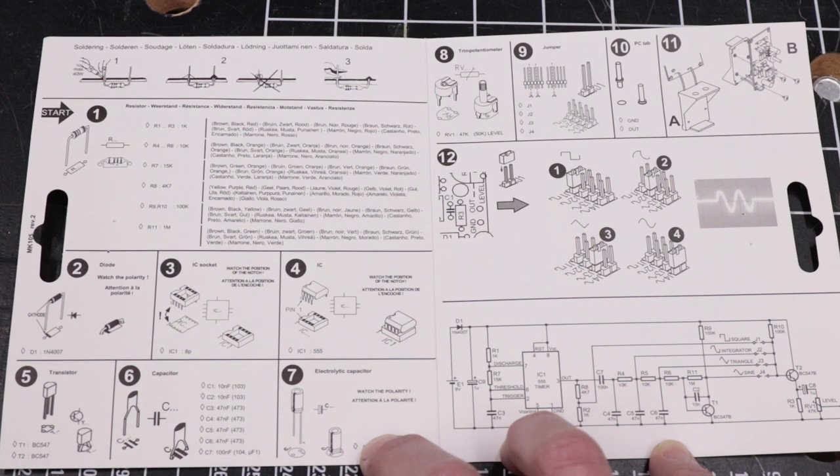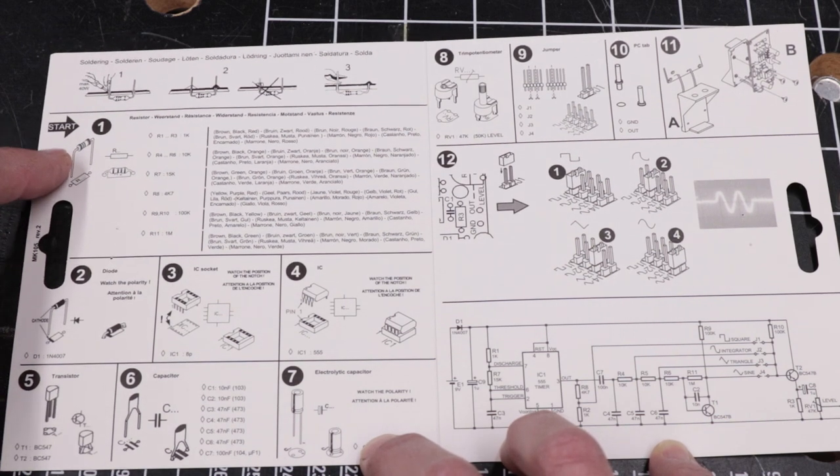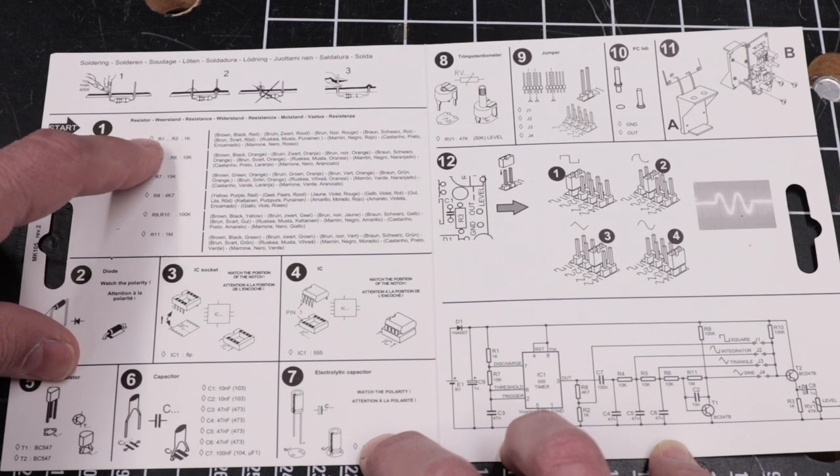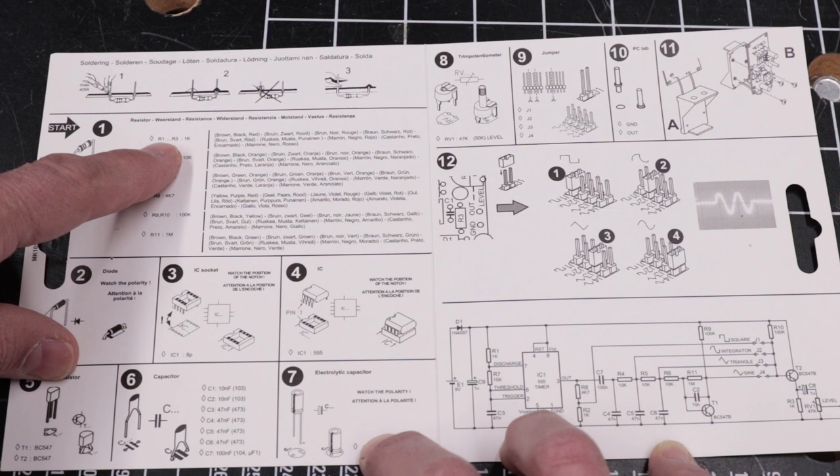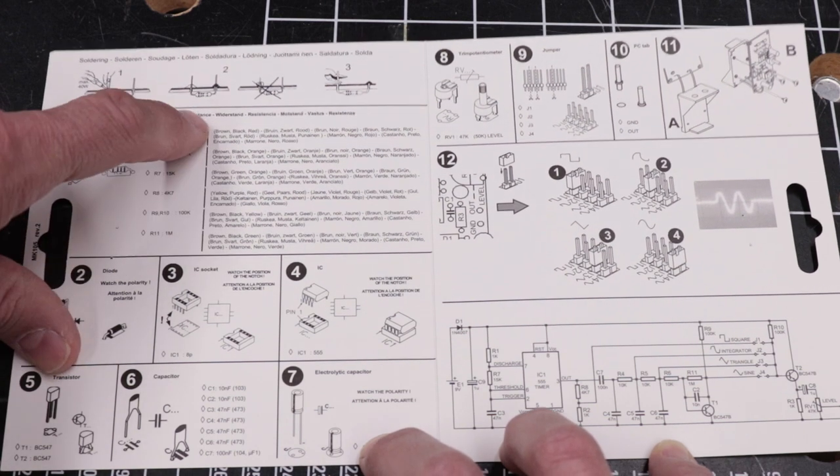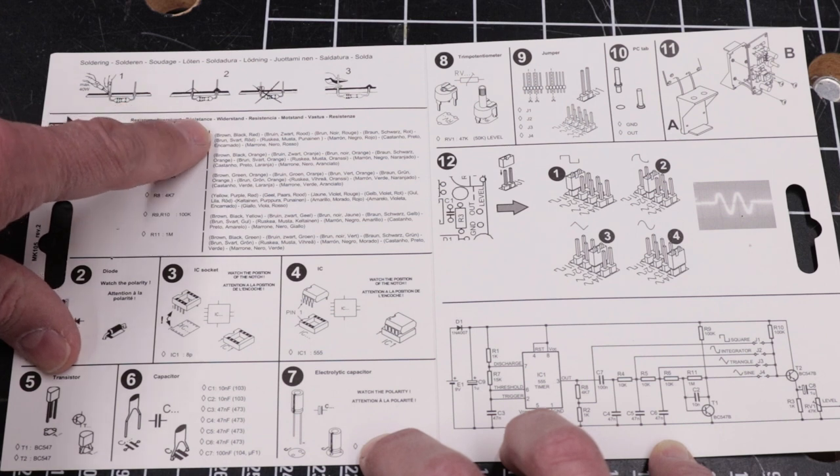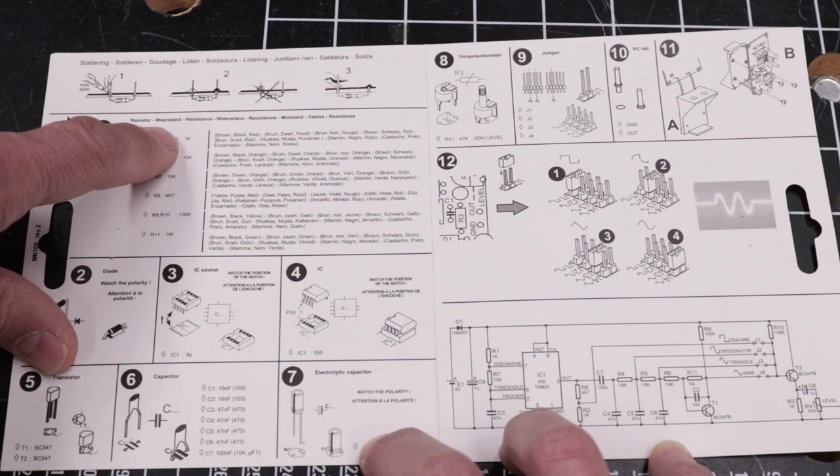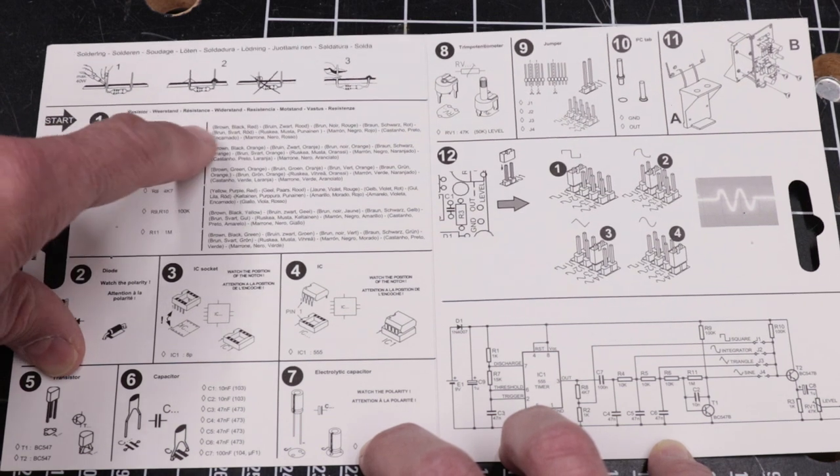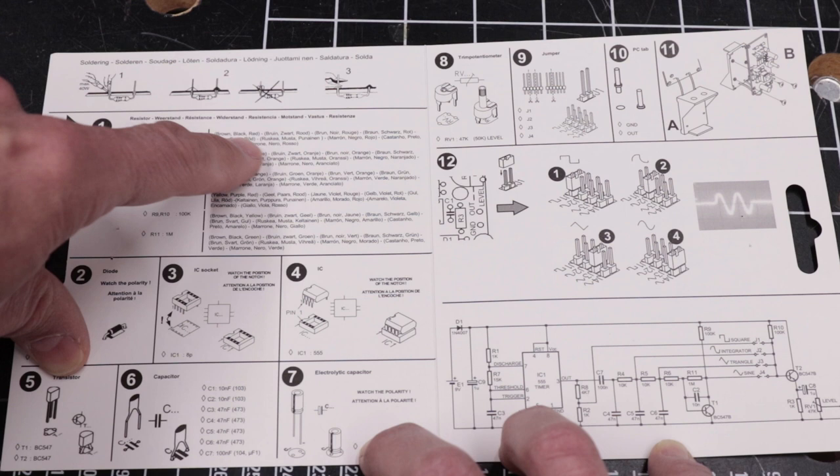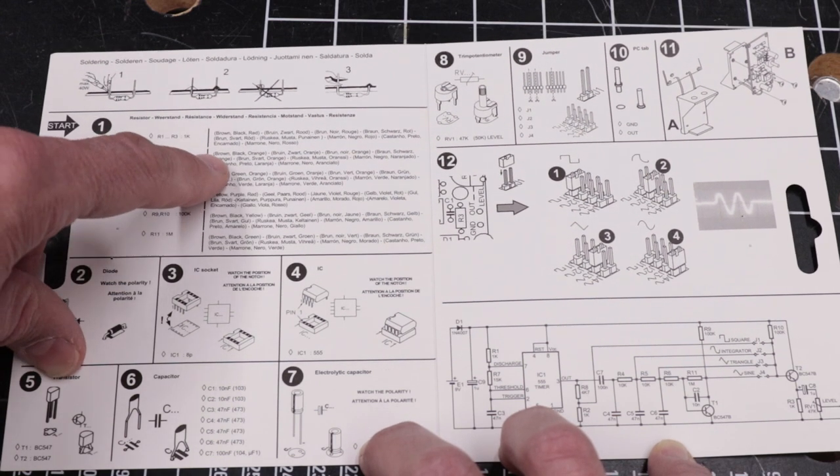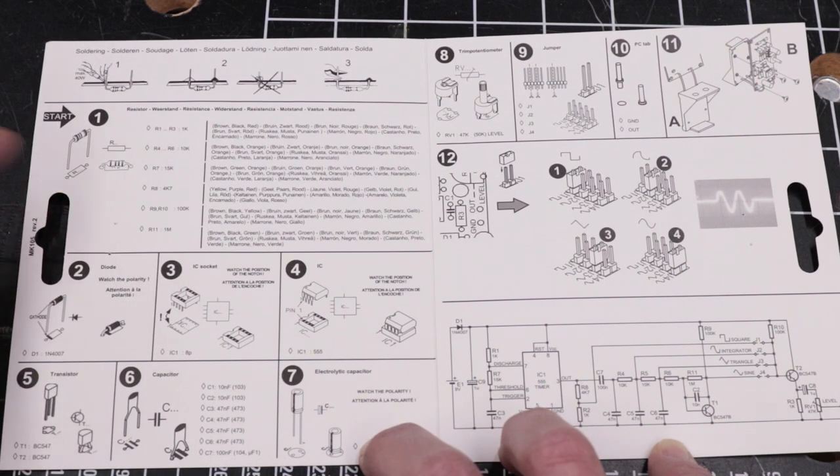We have the resistors as number one. And this is very well laid out because it has the numbers for the resistors, which are marked on the PC board, and the values for the resistor here. But over here, they're actually telling you what colors represent those values. So you don't even have to look it up. Whenever it says R1 to R3, you use the brown, black, red resistors. And when you need resistors R4 through 6, you use the brown, black, orange resistors, and so forth.